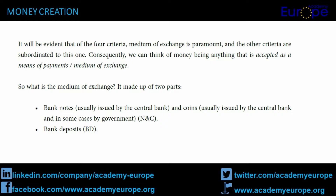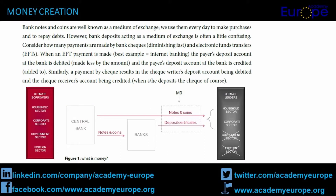Consequently, we can think of money as anything that is accepted as a means of payment — i.e. medium of exchange. So what is the medium of exchange? It is made up of two parts: bank notes, usually issued by the central bank, and coins, usually issued by the central bank and in some cases by government — NNC. And bank deposits — BED. Bank notes and coins are well known as a medium of exchange; we use them every day to make purchases and to repay debts. However, bank deposits acting as a medium of exchange is often a little confusing.